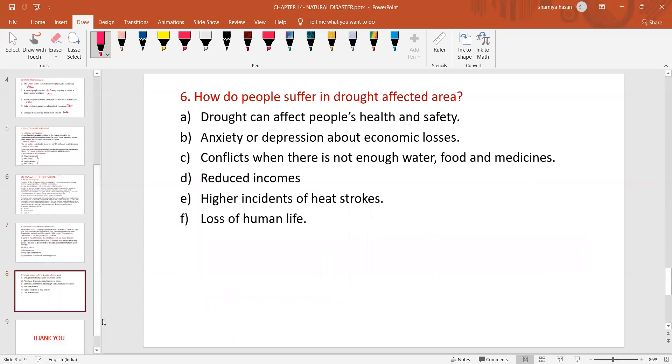How do people suffer in drought affected area? Drought can affect people's health and safety, anxiety or depression about economic losses, conflicts when there is not enough water, food and medicines, reduced incomes, higher incidence of heat strokes, loss of human life.